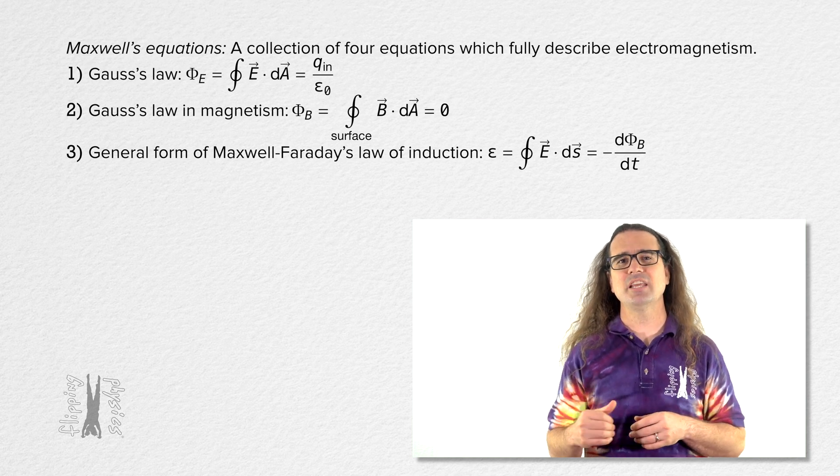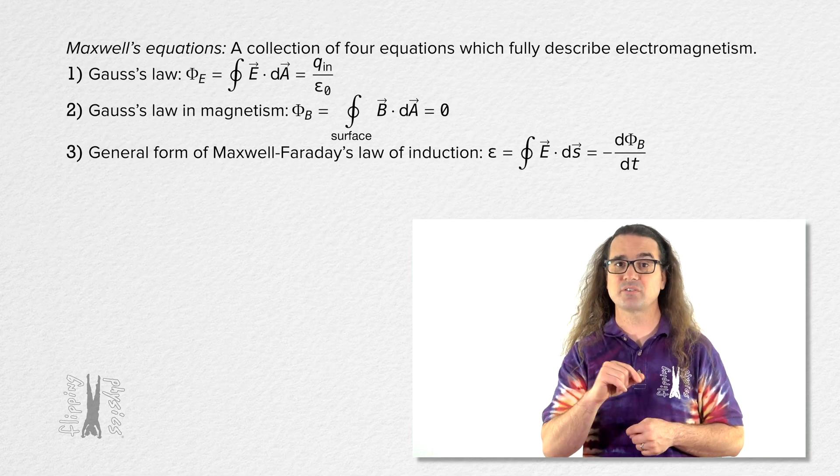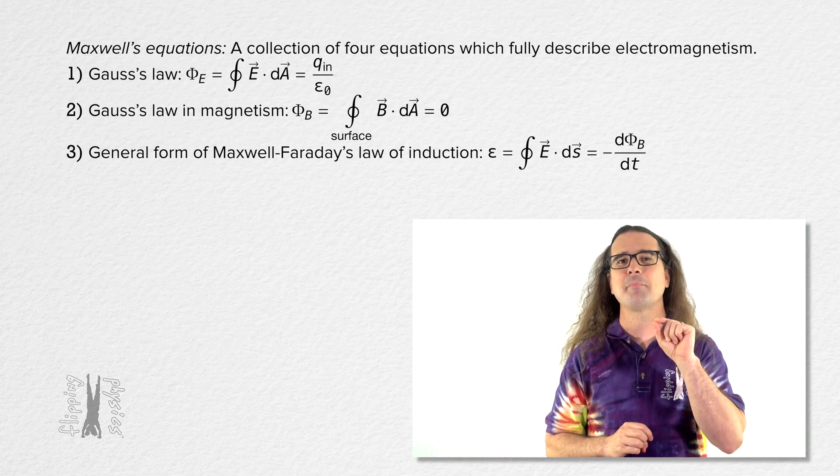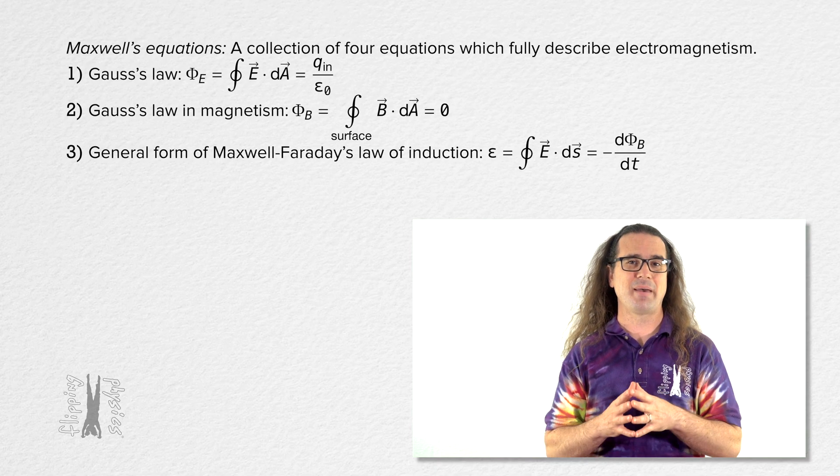It states that the induced EMF equals the closed loop integral of the dot product of the electric field and the infinitesimal distance ds, which equals the negative of the derivative of the magnetic flux with respect to time, or the time rate of change of the magnetic flux.